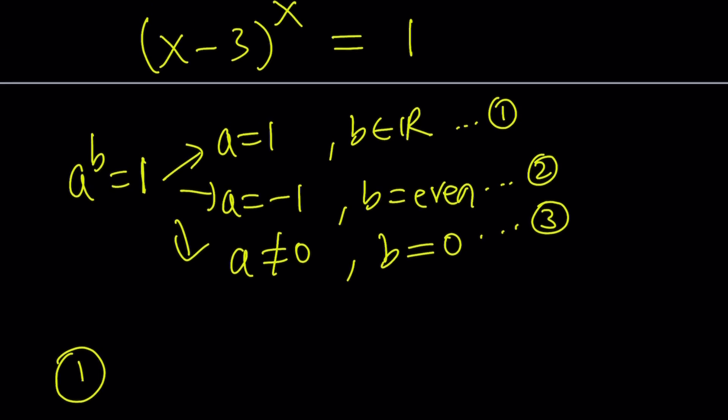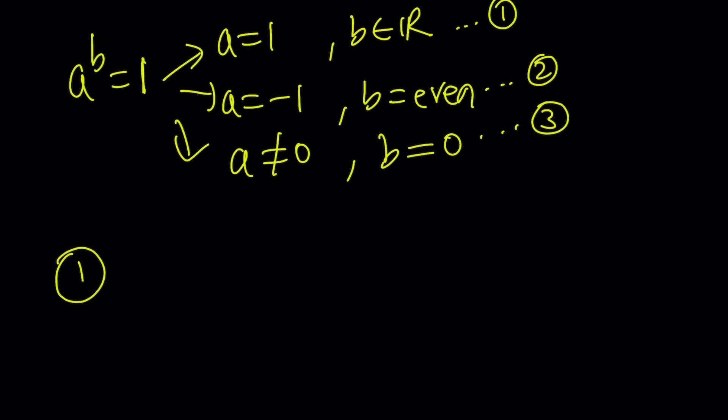1, 2, and 3. Let's go ahead and look at each case. a is equal to 1, and b is anything. We don't care about the exponent in this case. So x minus 3 equals 1. Now from here we get x equals 4. And don't worry, we're going to check all these answers at the end. That's the first case. Easy, right? Piece of cake.